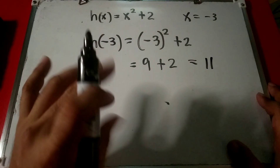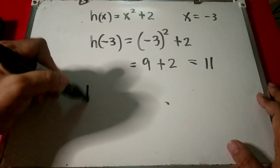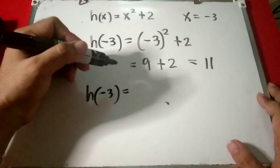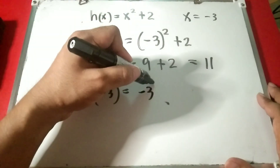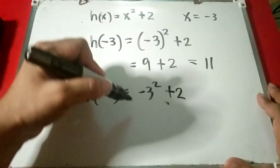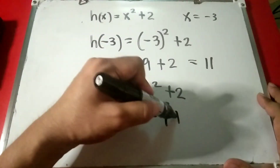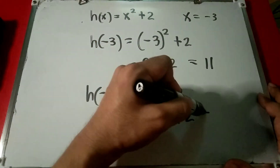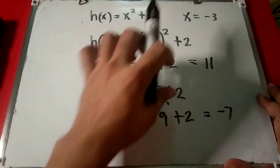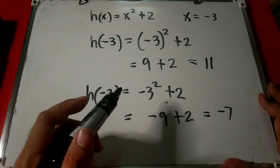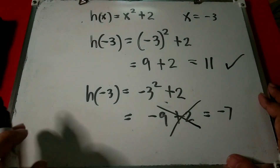Without parentheses you could make a mistake. For example, writing negative 3 squared without parentheses gives negative 9, and negative 9 plus 2 equals negative 7 — which is wrong. So always use parentheses when substituting values.